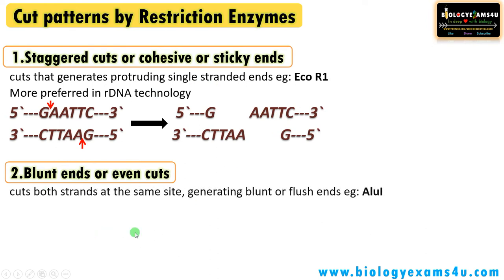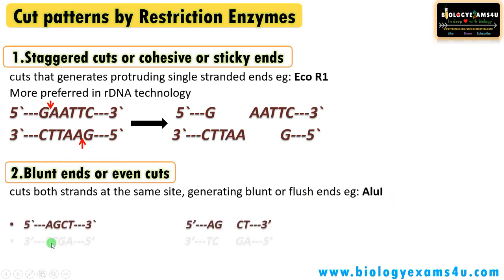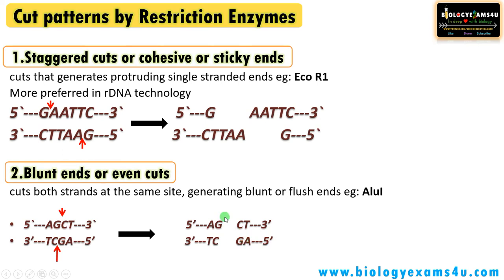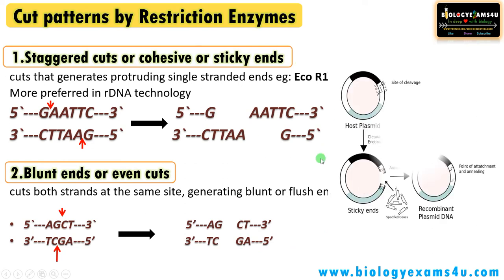The second type of cut produces blunt ends. Here, both strands are cut at the same position, generating flush ends with no single-stranded extensions. In the case of AluI, the recognition site is AGCT and the cut is made after G, producing no overhangs. Therefore, this cut is called a blunt end or even cut.